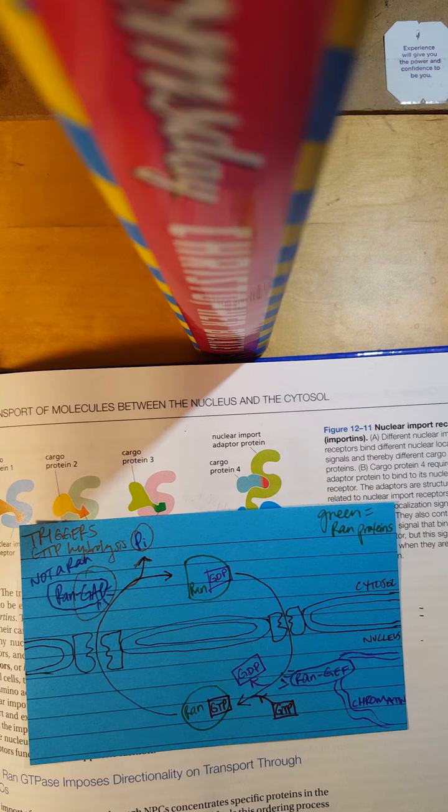RAN GDP is imported into the nucleus by its own import receptor, which is specific for the GDP-bound confirmation of RAN. The RAN GDP receptor is structurally unrelated to the main family of nuclear transport receptors. However, it also binds to FG repeats in the nuclear pore complex channel nucleoporins.